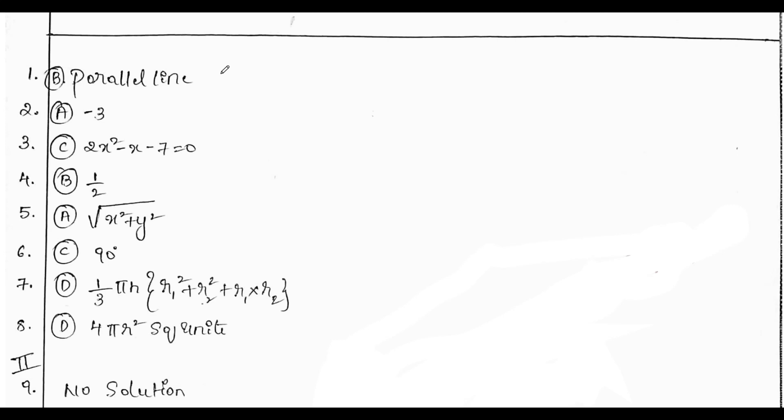Now, we will see for the first question, the answer is parallel line. Then the common difference of AP is minus 3, the standard form of quadratic equation. For third question is 2x squared minus x minus 7 equals 0. Then for fourth question, cos of 90 minus 30 is sin 30, it is 1 by 2.